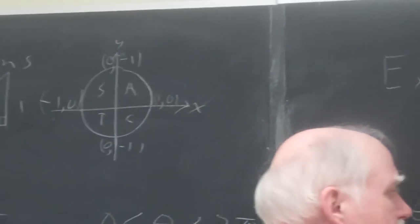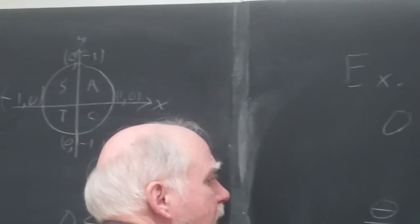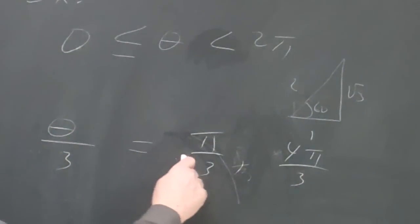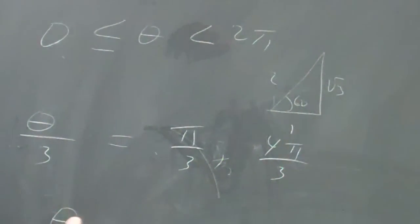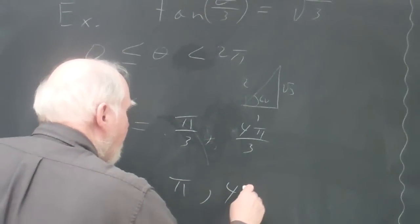You might say, do I have to get two more? No, we're going to multiply every term by 3, every expression here by 3, and I'm going to get theta is going to equal pi, 4 pi.